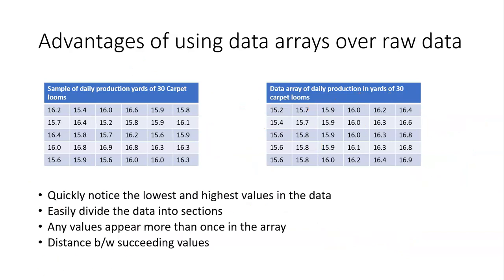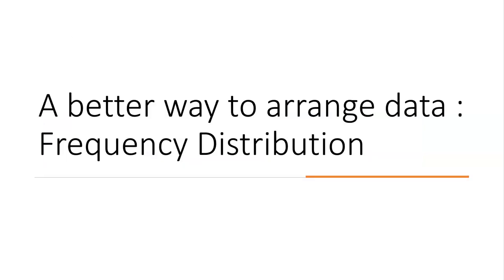But there is a better way to arrange data—that is using frequency distribution. When we record the number of data points that fell into each group, that is called frequency distribution.